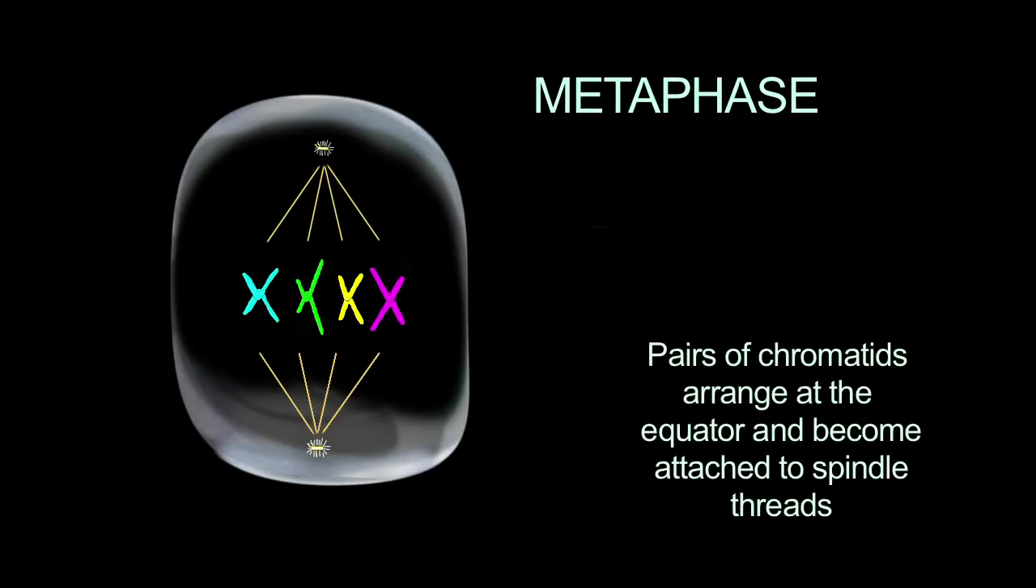Metaphase commences when pairs of chromatids are arranged at the equator of the cell and become attached to the spindle threads. The chromatids are held together by the centromere. Contraction of the spindle threads draws the individual chromatids slightly apart.